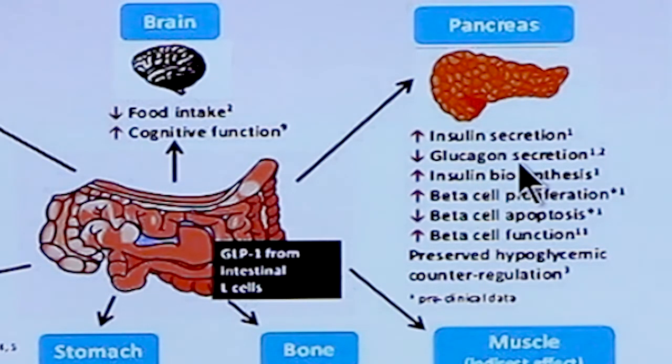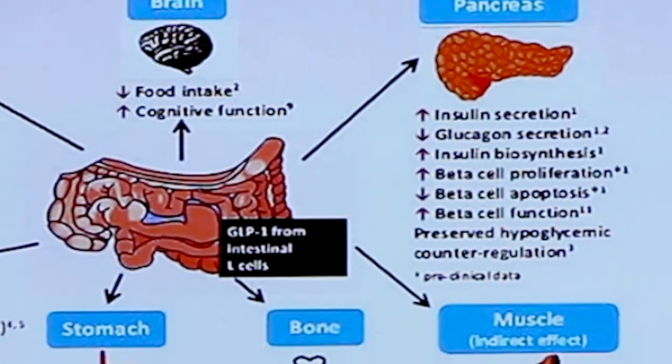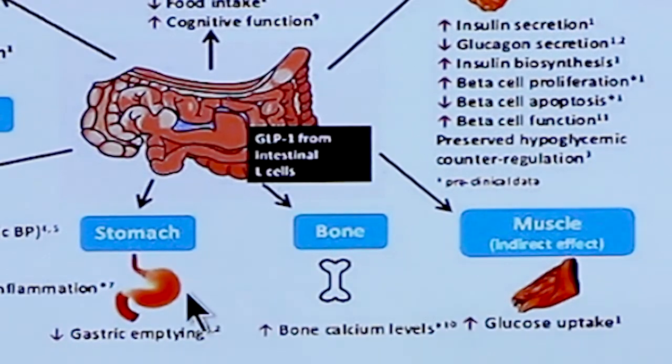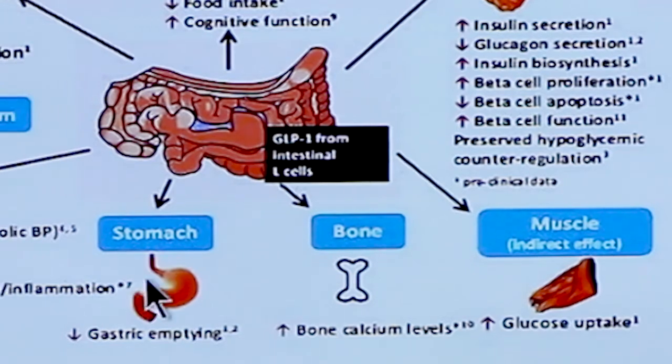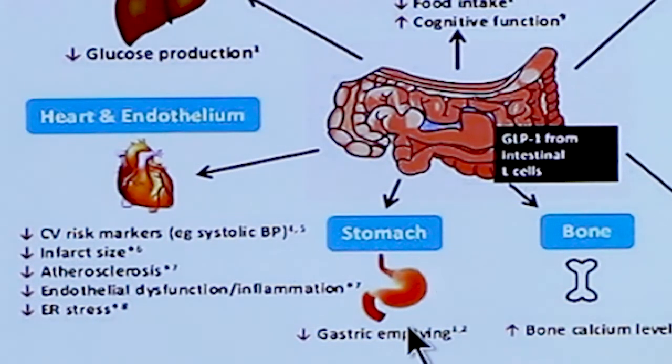It can decrease glucagon secretion, also in a glucose-dependent fashion. It is known to help the beta cell in different forms. It decreases the apoptosis, which is the death of the beta cell. It has an effect on the muscles and bone, but also had a mainly effect on the stomach by decreasing emptying.